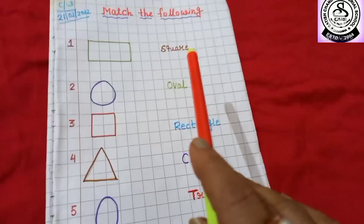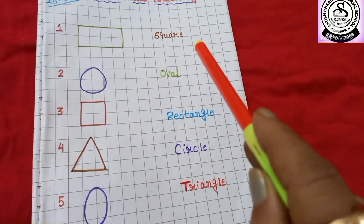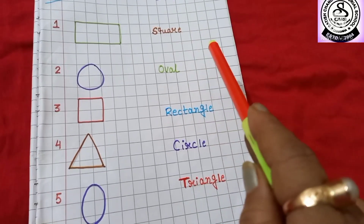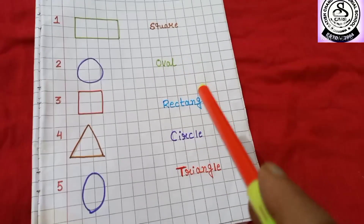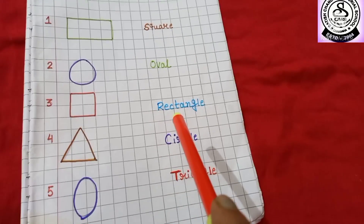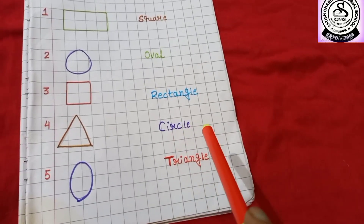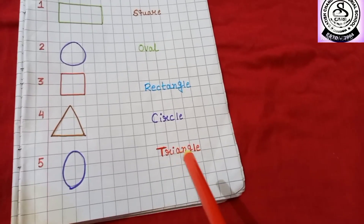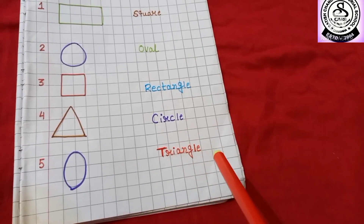First you have to read carefully what I have written. Square — S-Q-U-A-R-E, square. Then oval — O-V-A-L, oval. Then rectangle — R-E-C-T-A-N-G-L-E, rectangle. Then circle — C-I-R-C-L-E, circle. Then triangle — T-R-I-A-N-G-L-E, triangle.